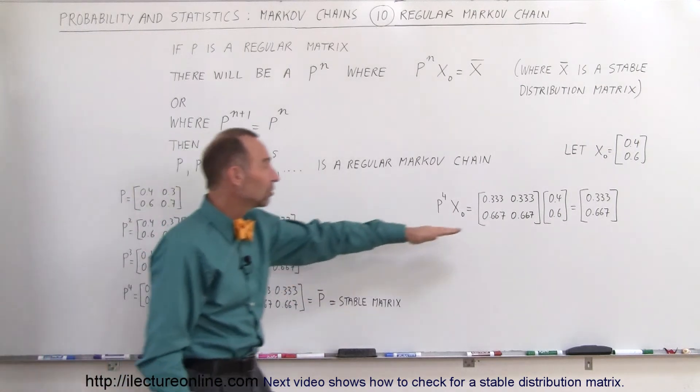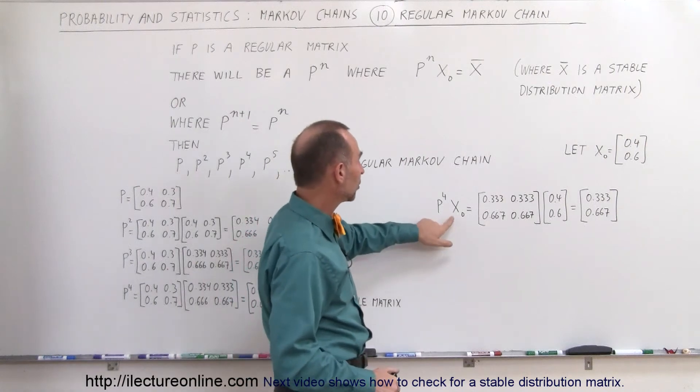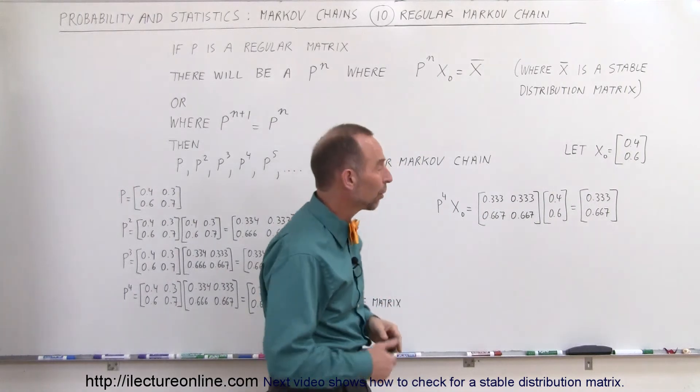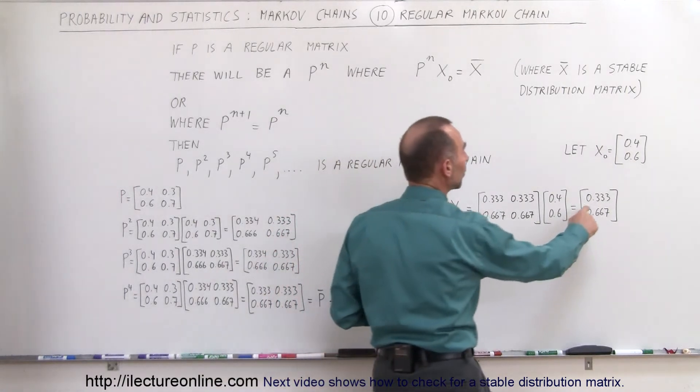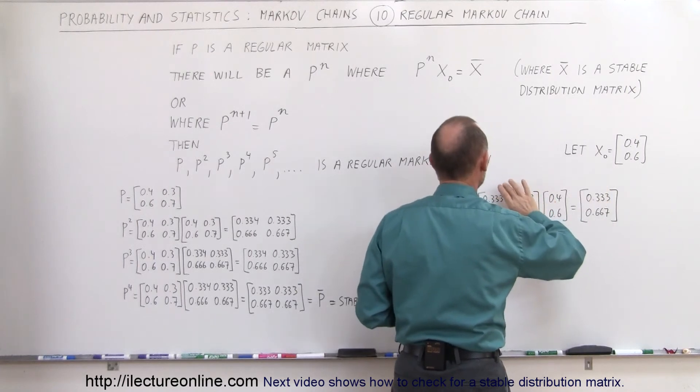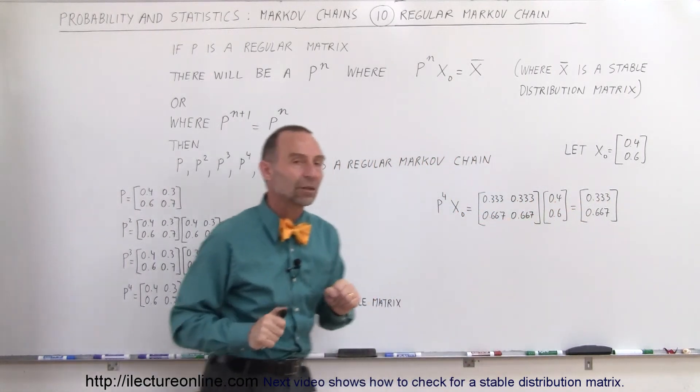So if we take this matrix, P to the fourth power, which we now know is stable, and we multiply it times an initial state, let's say that x sub-naught is 0.4, 0.6, notice that we get 0.333 and 0.667 which mirrors the stable P matrix, which means that this is therefore the stable distribution matrix.